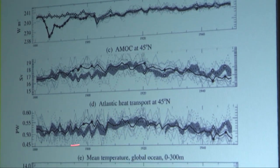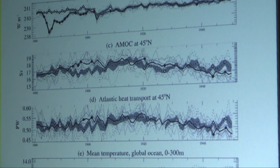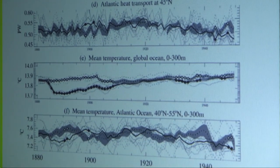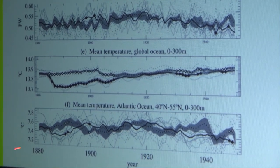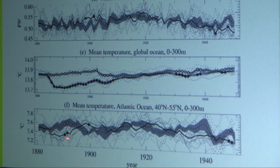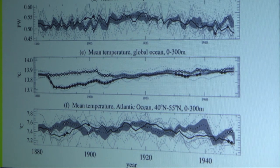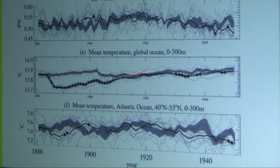The AMOC has an impact on Atlantic heat transport with increased heat transport. Even though the global ocean gets a lot colder when you put the volcano in, if you just look at the Atlantic Ocean, you get two responses: initially it cools in the first few years after the eruption, but then as the AMOC and heat transport increases, you actually see a bit of warming. The average is over 40N to 55N, so maybe a smaller box would give more statistical significance.